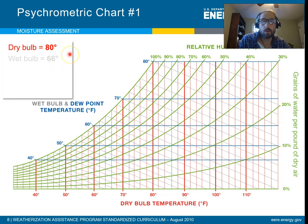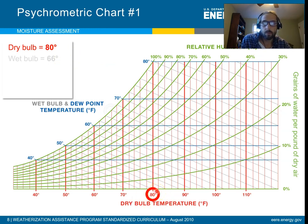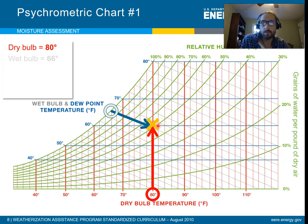Let's say we do our sling psychrometer and get a dry bulb of 80 and a wet bulb of 66. On the psychrometric chart we have dry bulb here, wet bulb and dew point, and the relative humidity shown by these green curved lines. Over here is our grains of water vapor per pound of dry air — our absolute humidity. So we find 80 on the dry bulb, go up, find 66 on the wet bulb line, and find where they meet, which falls almost exactly on the 50% relative humidity line.